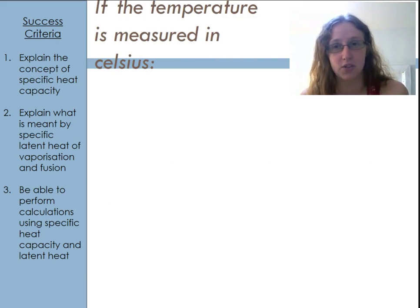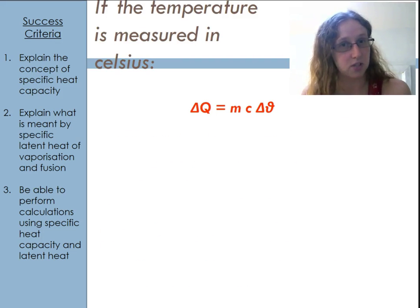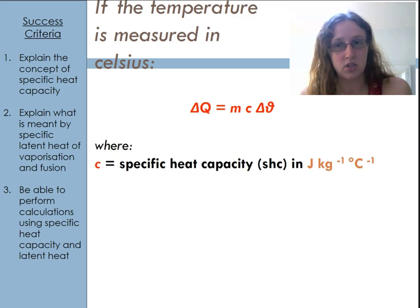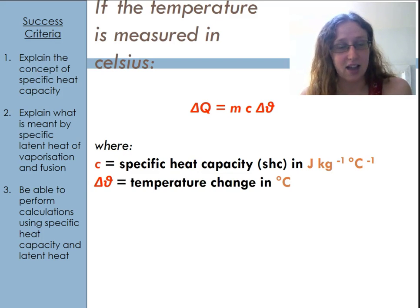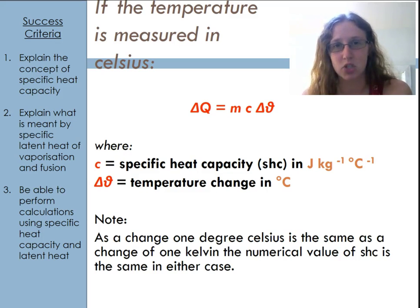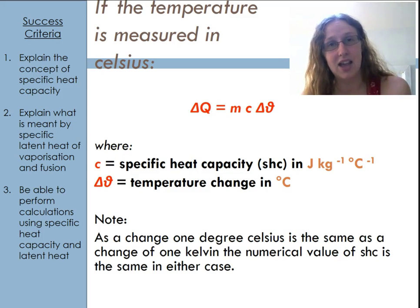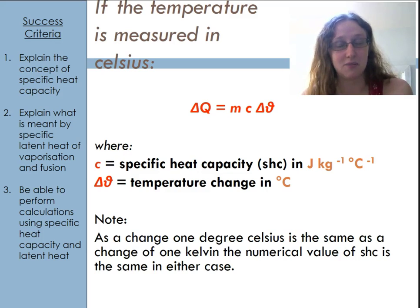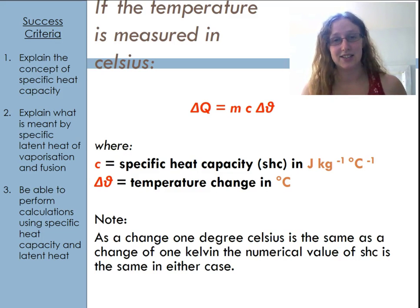If the temperature is given in Celsius, I use a slightly different form: ΔQ = mcΔθ, where the specific heat capacity would be in joules per kilogram per degree Celsius and Δθ gives the temperature change in degrees Celsius. However, since a change in temperature in degrees Celsius is exactly the same as a change in kelvin, the two values for specific heat capacity will actually be the same. So in this instance it doesn't matter which you use.